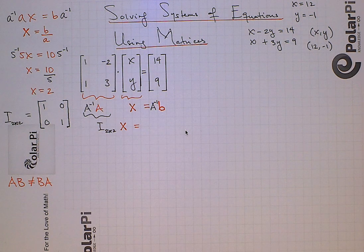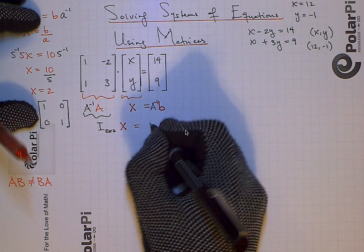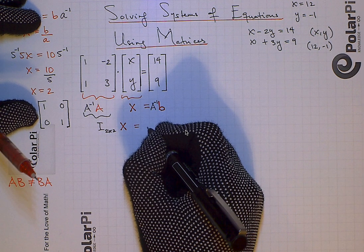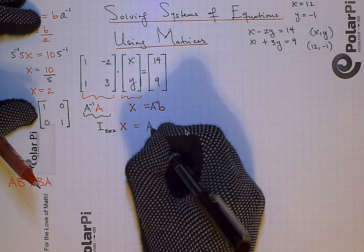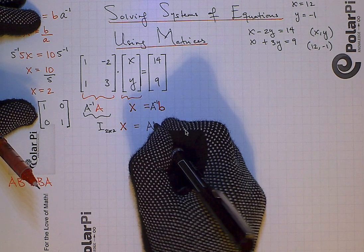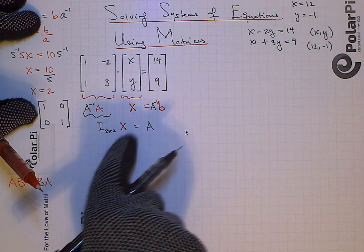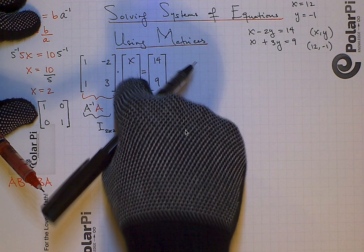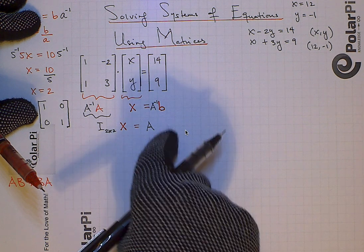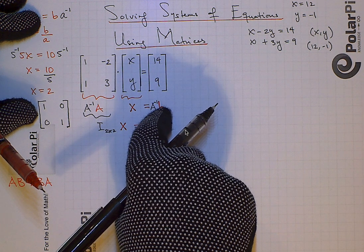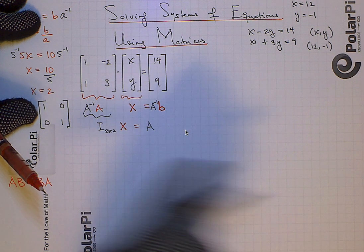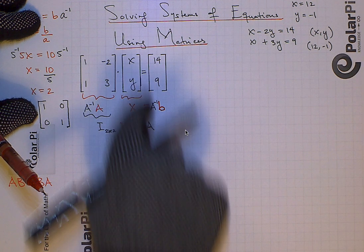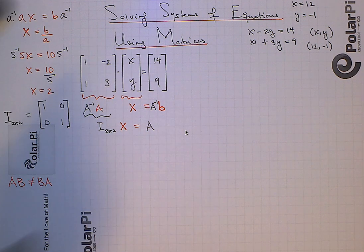That two by one will turn out to be what we get when we multiply A inverse and B. Without actually doing the multiplication of A inverse and B, we can only say it's going to be a two by one. So on the left I have a two by one matrix, which is x and y. And on the right I'll have a two by one matrix that's the product of A inverse and B. Then, by looking at corresponding entries, we can figure out what x is and what y is, and we're going to do that exactly.